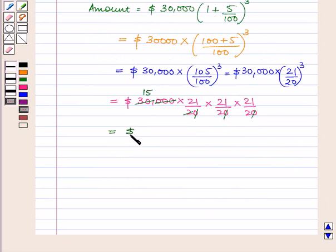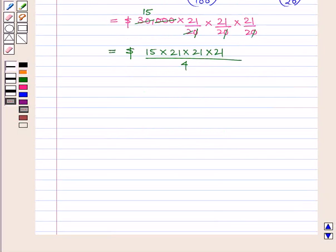This equals 15 × 21 × 21 × 21 / 4 dollars = 138,915 / 4 dollars = $34,728.75.